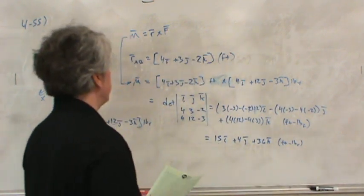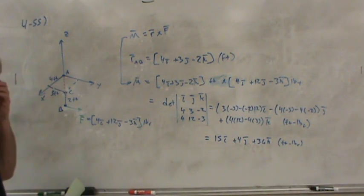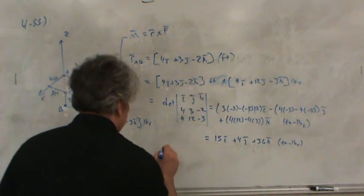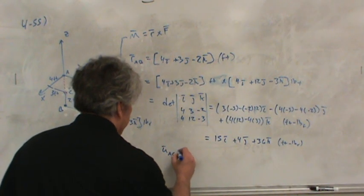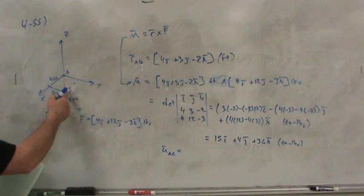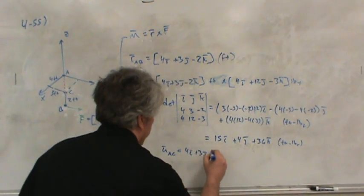This is the total moment of this force about the line AB. But that's not what we want. We want the moment of the force about AC. So, what we're going to need is a unit vector from A to C. So, if we go from A to C, then that would be 4i plus 3j. And these are feet.